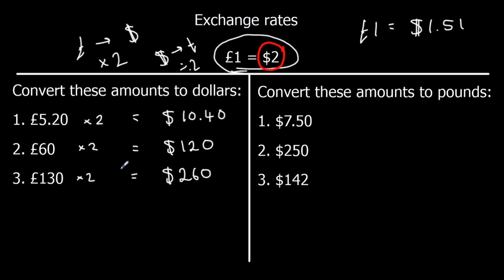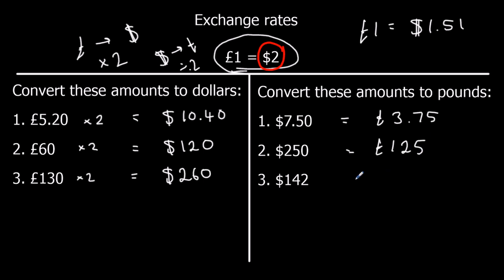So we're just multiplying by the exchange rate to convert pounds to dollars. Converting from dollars back to pounds, we're going to divide by 2 — to go backwards, we're dividing by 2. So $7.50 — we're halving it — that's £3.75. $250 is £125. And $142 is £71. So we're just dividing by 2, and that's converting back into pounds.